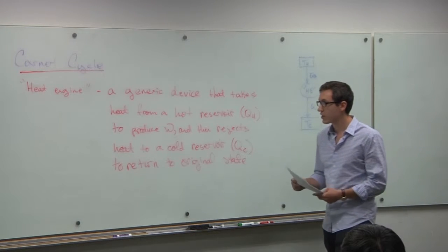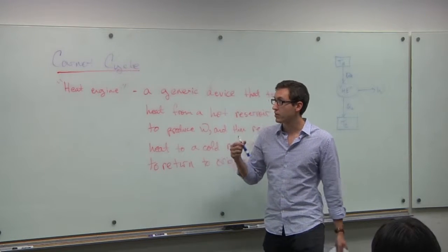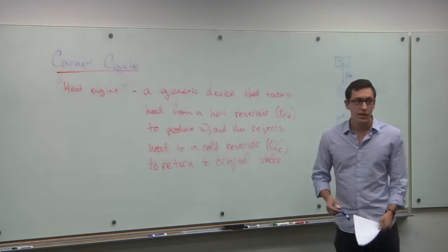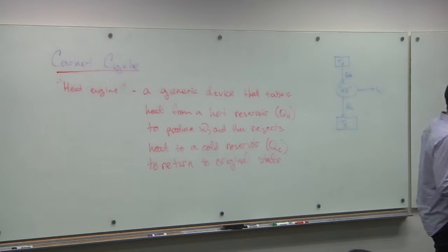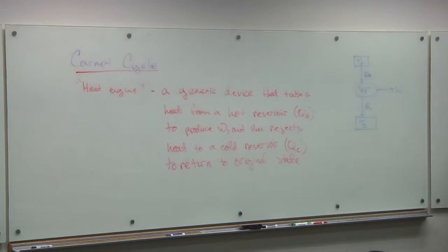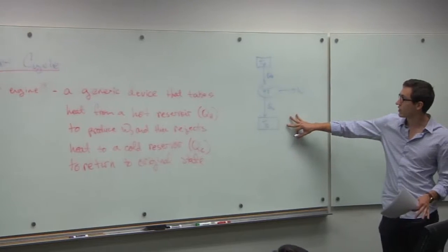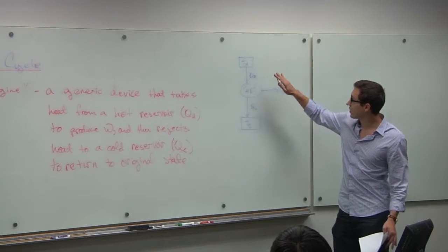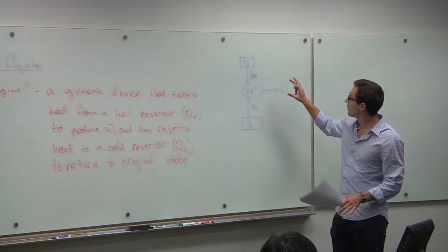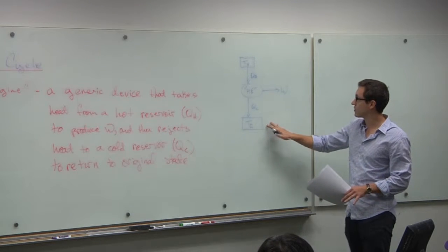So when we talk about a Carnot cycle, we're specifically referring to a heat engine. A heat engine is just a generic name for a device where we're putting heat in, we're trying to get some work out, and then you have to cool it back off to get it to its original state. We take some heat from a hot reservoir TH, get some work out, cold reservoir TC.